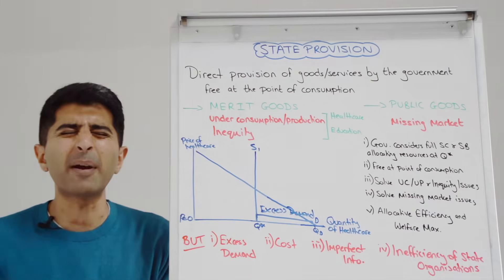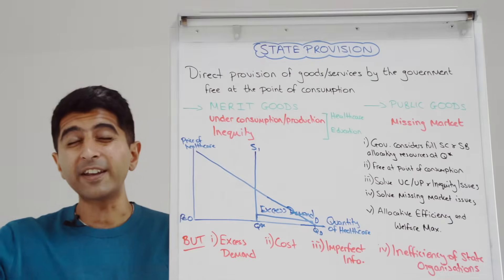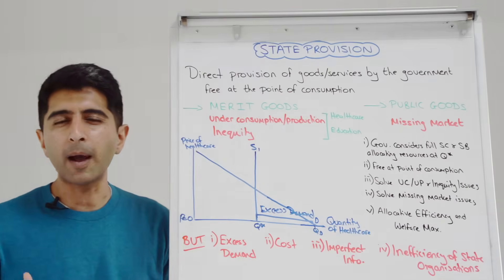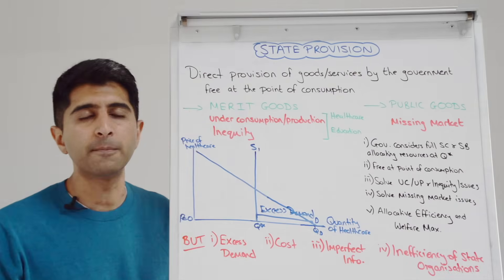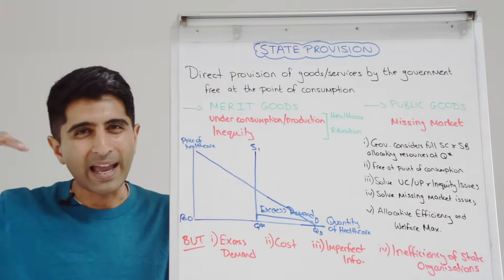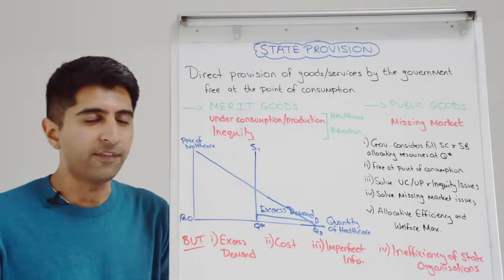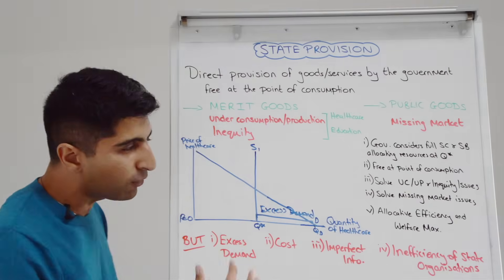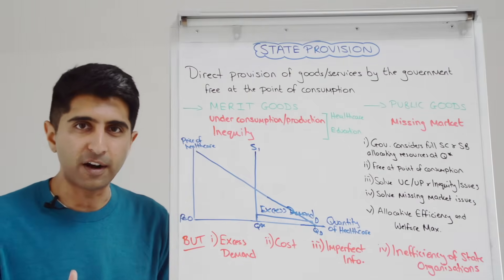At the same time, we can worry about just how expensive state provision is. Bear in mind, the government has taken over the entire market — huge sums of taxpayers' money going into state provision. So you can worry about long-run funding, higher taxes, cuts to other areas of government spending, debt interest that needs to be paid, and general opportunity cost arguments are very valid here.